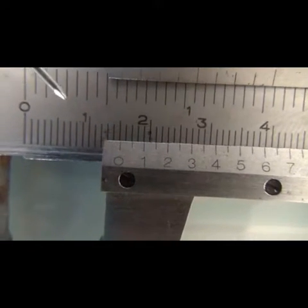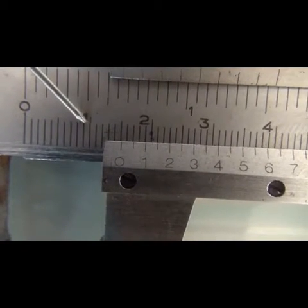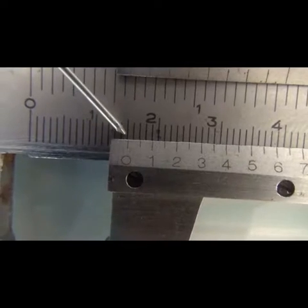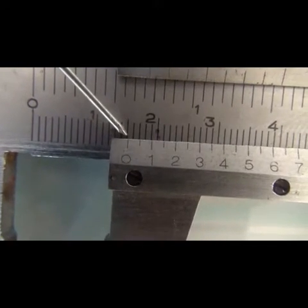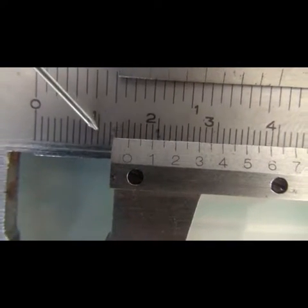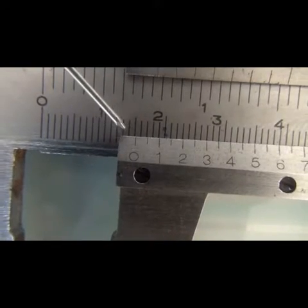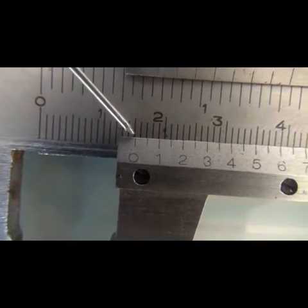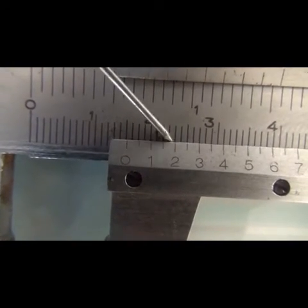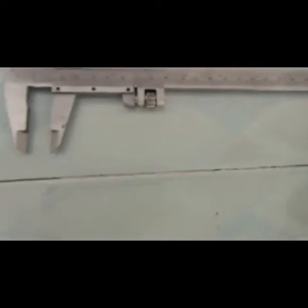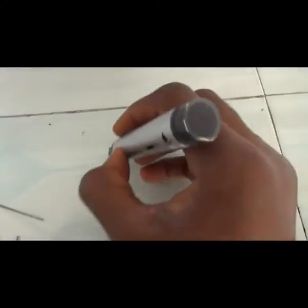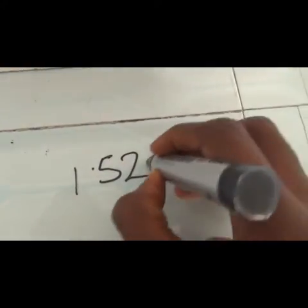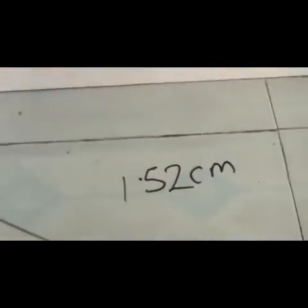You pick our point from here. 5, which is the decimal point before touching the zero. 1, 1.1, 1.2, 1.3, 1.4, 1.5. 1.5 what? 1.52 centimeters. That is the length, that is the internal diameter of this object.